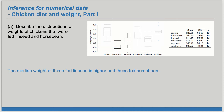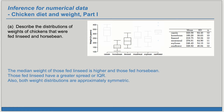We can compare the median for center. For spread, we can look at the IQR, and we note that those fed linseed have a greater spread or IQR. Also, both weight distributions are approximately symmetric. We can't tell normality from a box plot, but we can observe that they're both approximately symmetric. So: center, spread, and shape.